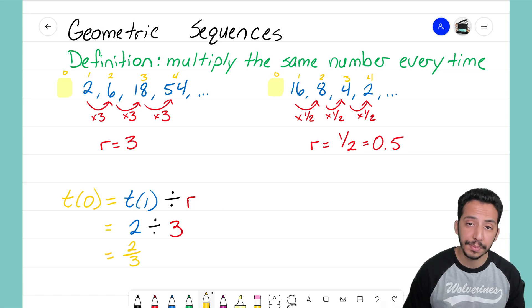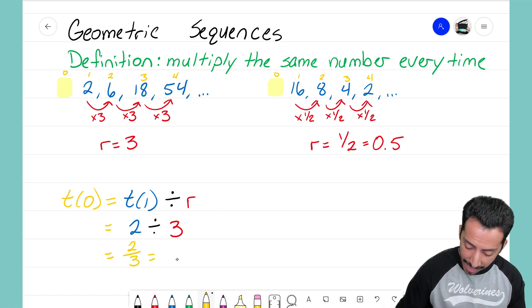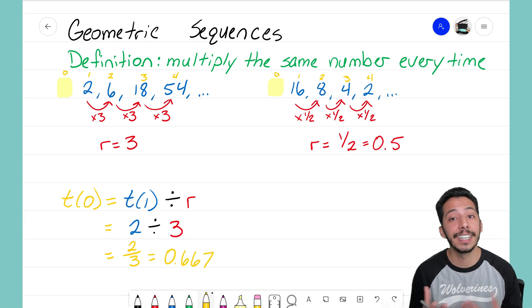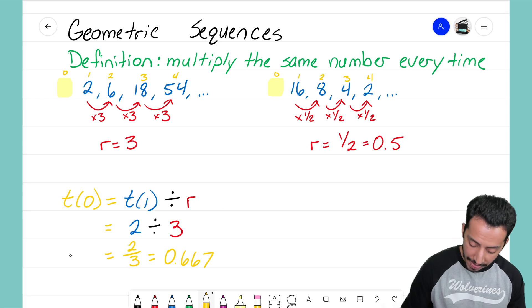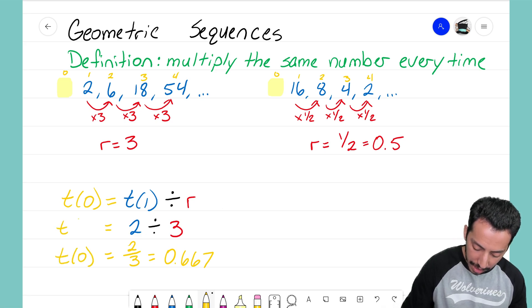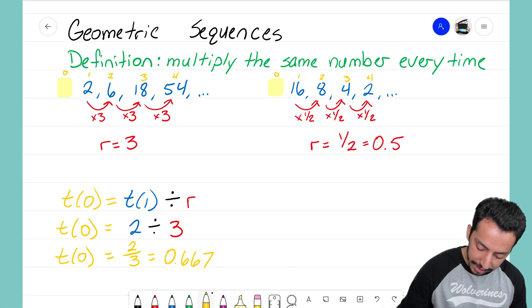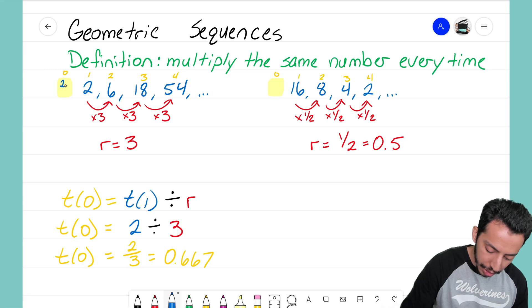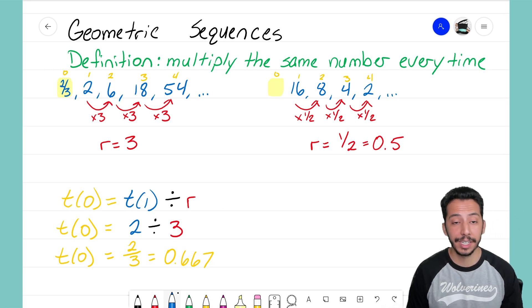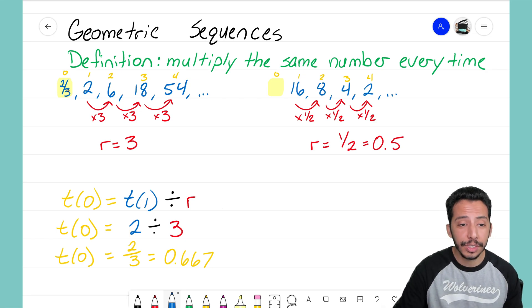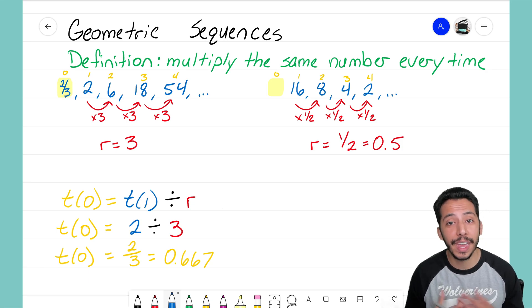I'm going to divide 2 by our common ratio. In this first sequence we know the common ratio was 3, so we're taking 2 and dividing it by 3. Two divided by 3 - you could write it as a fraction or a decimal - will either be two thirds or 0.667 if you round that out. That right there is how you find that zero term in the zero position.